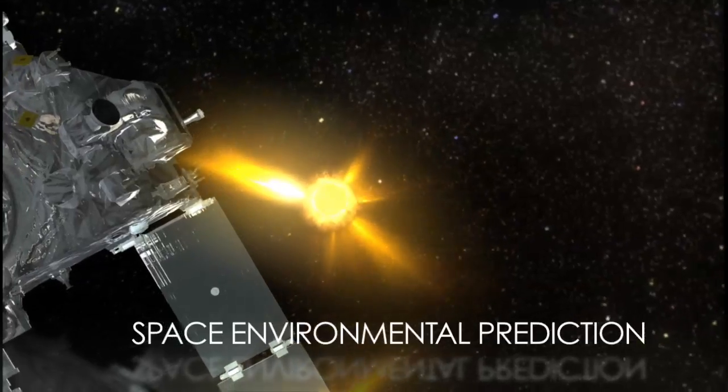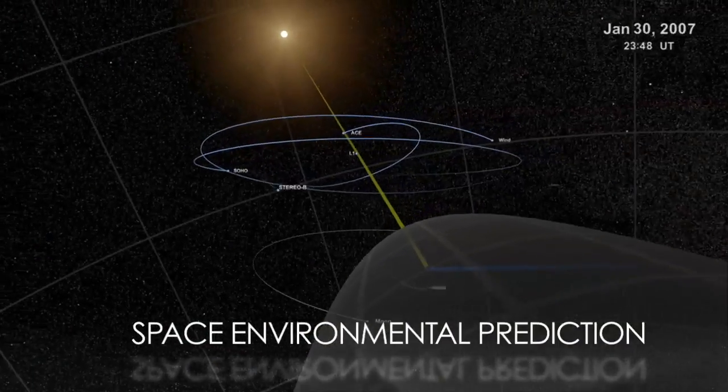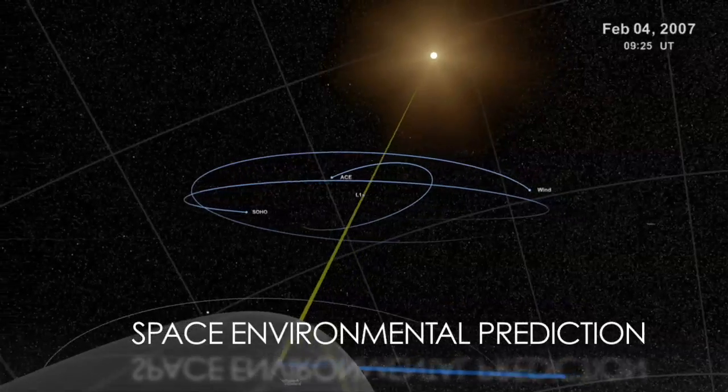In its study of heliophysics, NASA uses a fleet of satellites to take an unprecedented look at the Sun and how it affects us here on Earth.